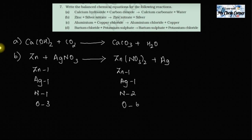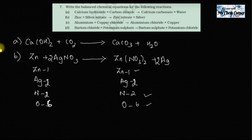Since NO₃ needs to be twice on the right, I put a coefficient of 2 in front of AgNO₃ on the left, making it two nitrogen and six oxygen on the left — that balances nitrogen and oxygen. Zinc is also balanced, but now there are two silver on the left and only one on the right, so I put 2 in front of Ag on the right. Now all atoms are balanced.